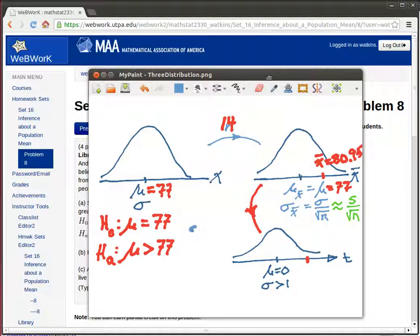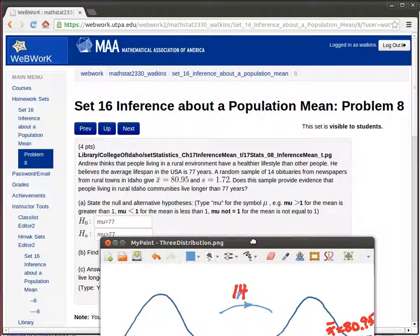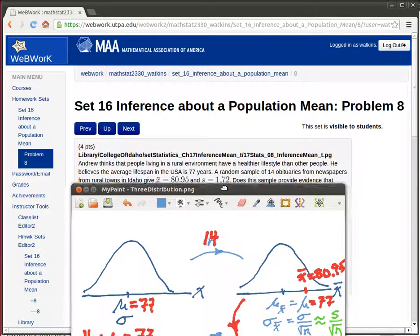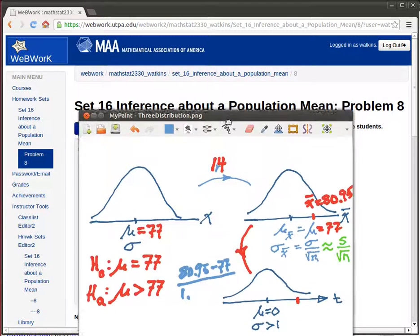We're just going to need to take that 80.95 minus the 77. That's how far our score is from the hypothesized mean divided by the standard error. And the standard error is the sample standard deviation, 1.72.